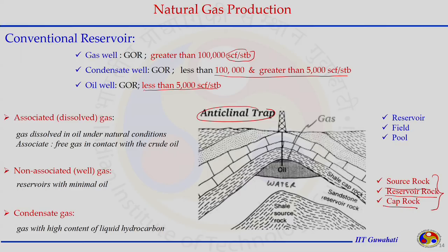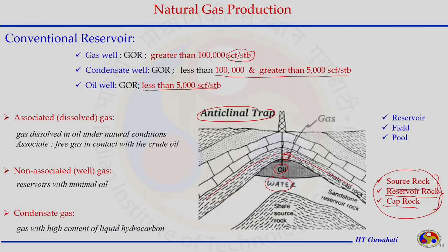All three rock types must be present in a domain to have significant petroleum reserves. In the anticlinal trap arrangement, gas sits on top, then oil, then water — due to density differences. This arrangement is called a gas cap drive reservoir. When a well is drilled, either oil, gas, or water may be produced first, and later a mixture of all three.